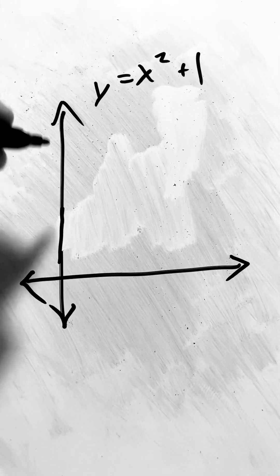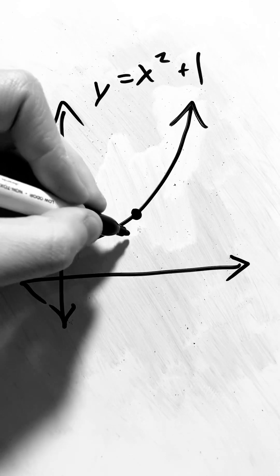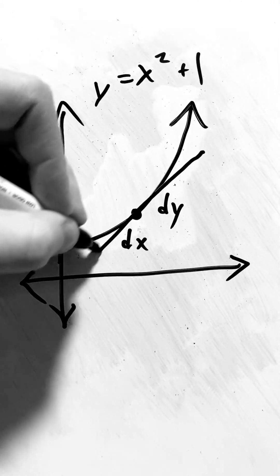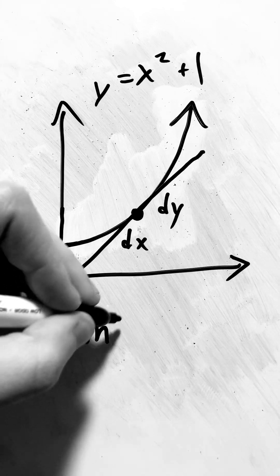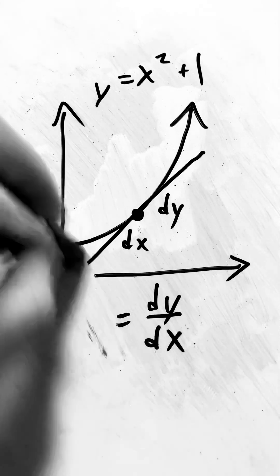Instead of using finitely long segments called delta x, delta y, we'll use infinitely small segments called dx, dy. This way, we can say that the slope is dy over dx instead of delta y, delta x.